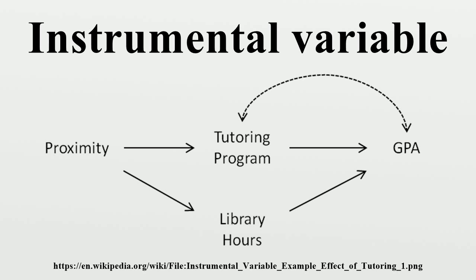The approach generalizes to a model with multiple explanatory variables. Suppose X is the T × k matrix of explanatory variables resulting from T observations on k variables, and let Z be a T × k matrix of instruments. Then it can be shown that the IV estimator is consistent under a multivariate generalization of the conditions discussed above. If there are more instruments than covariates so that Z is a T × m matrix with m > k, the generalized method of moments can be used, yielding a GMM-IV estimator where the second expression collapses to the first when the number of instruments equals the number of covariates.